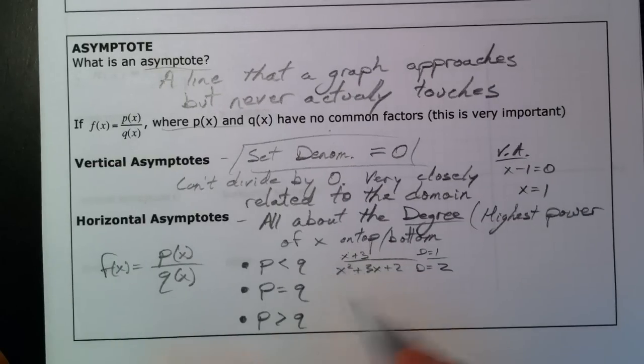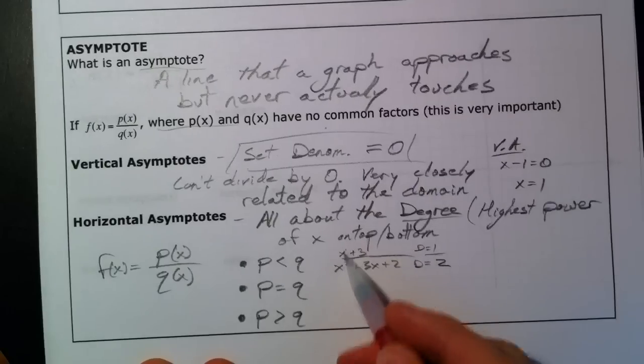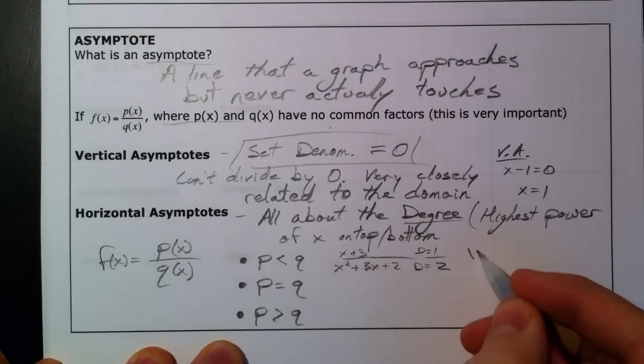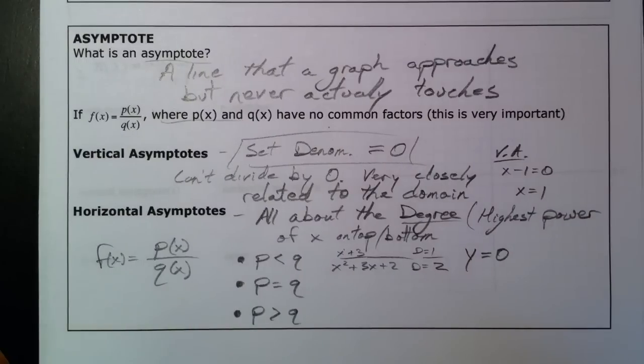And so, if you can imagine what happens at infinity, plug in a huge number here, plug in a huge number here, the bottom is going to get bigger, much faster. And so, this is going to have a horizontal asymptote of y equals zero. Because the bottom is going to get really huge, you're going to divide by a bigger number, you're going to get closer and closer to zero.